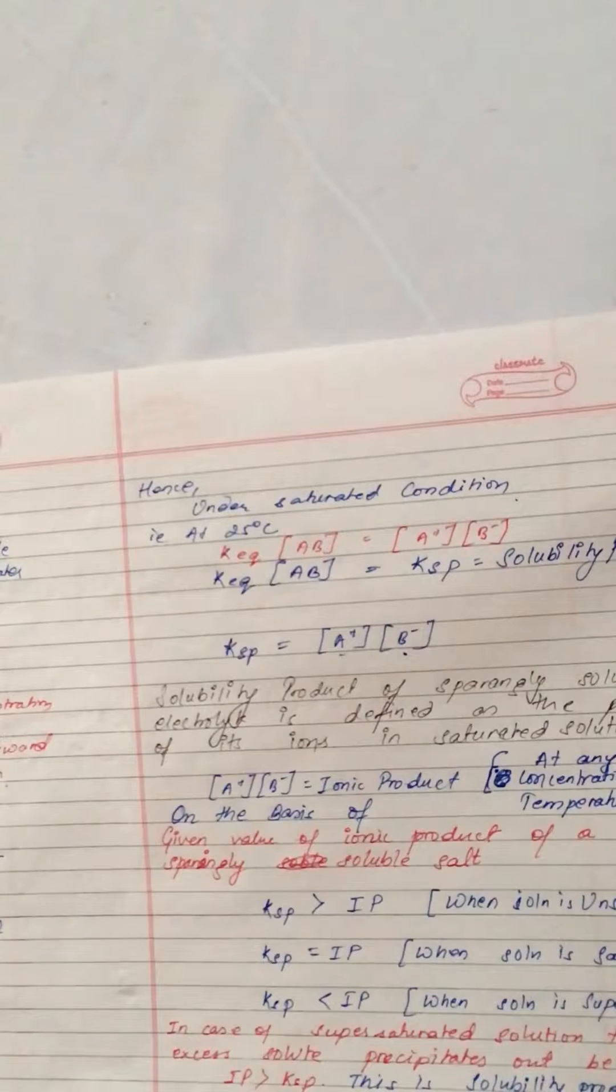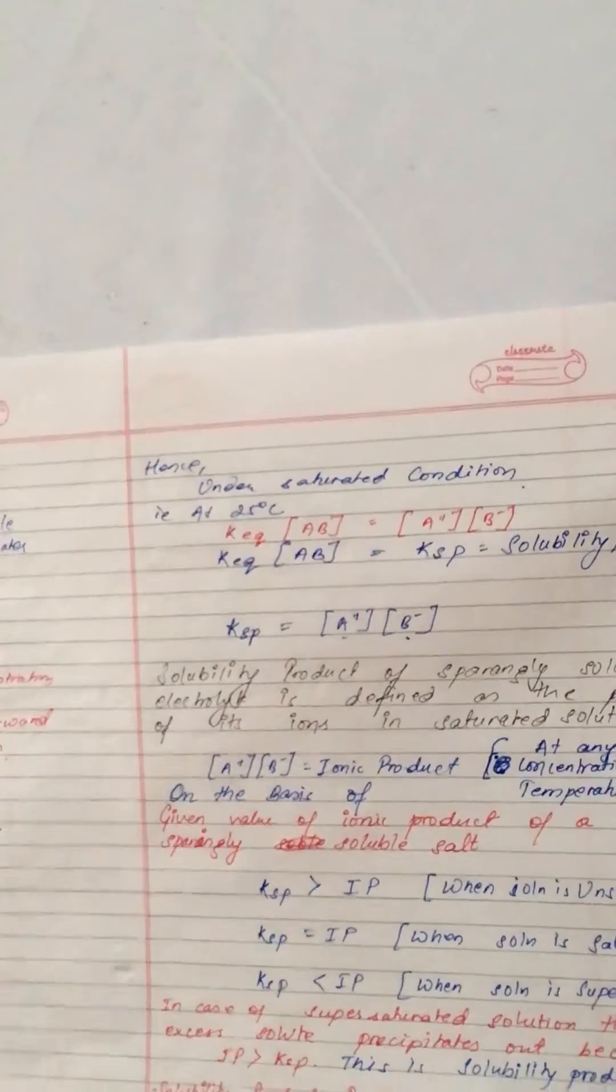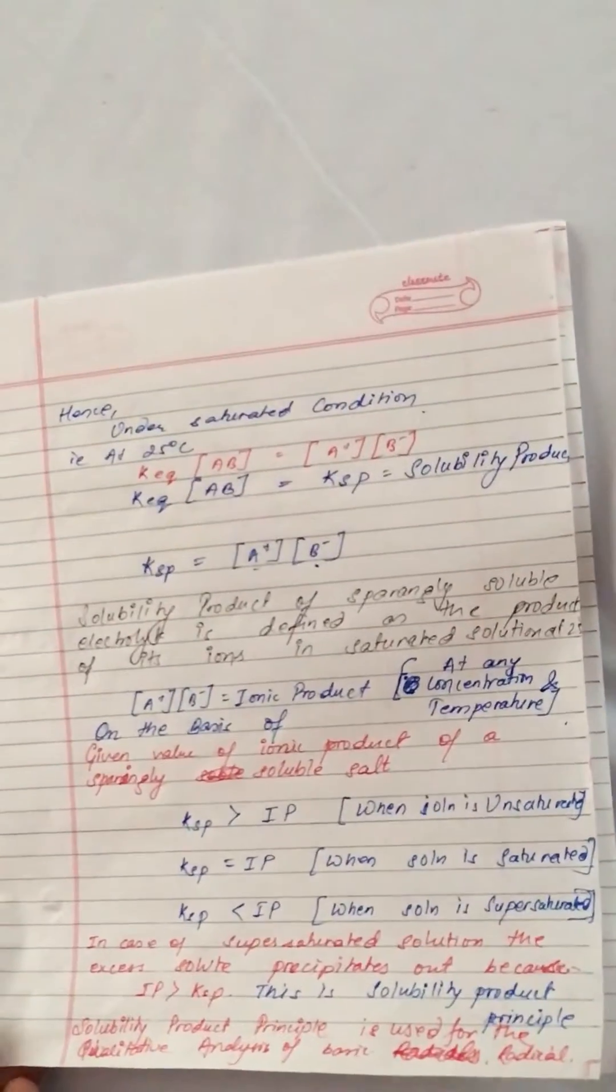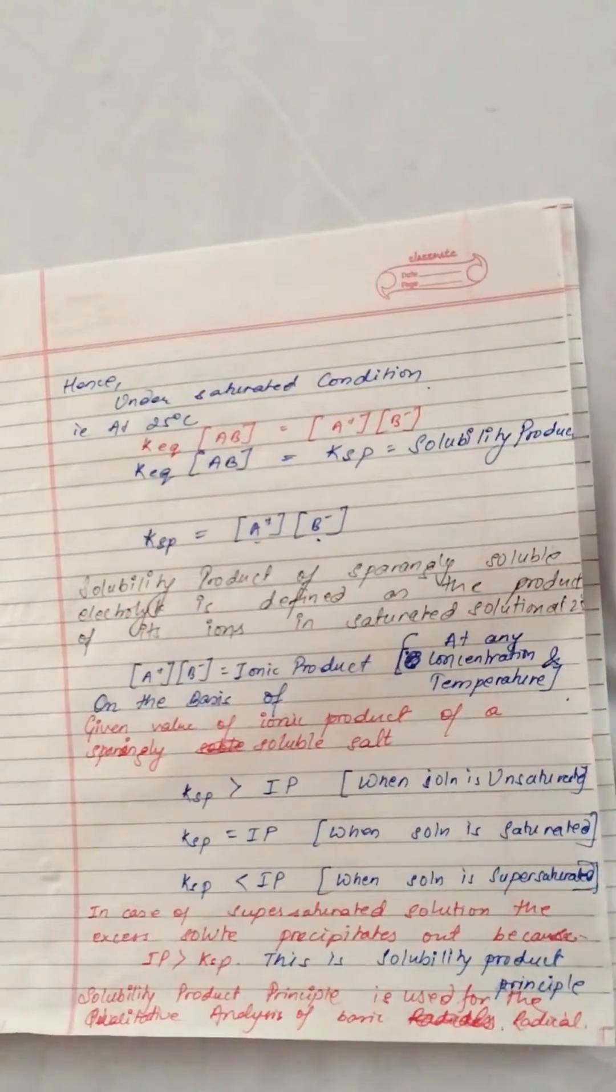Solubility product of a sparingly soluble electrolyte is defined as the product of its ions in a saturated solution at 25 degrees centigrade.